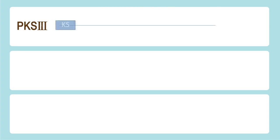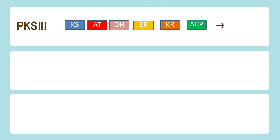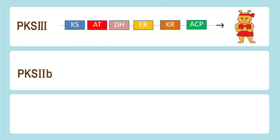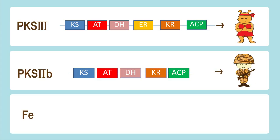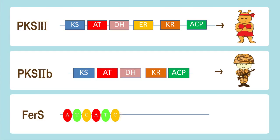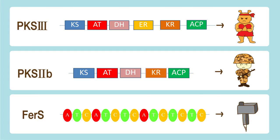PKS3 consists of ketosynthase, acetyltransferase, and acyl carrier protein — the three principal domains. PKS2b is similar to PKS3, except it does not contain the enoyl reductase domain. The non-ribosomal peptide synthetase FRS is arranged in a modular structure; each module consists of adenylation, thiolation, and condensation domains.